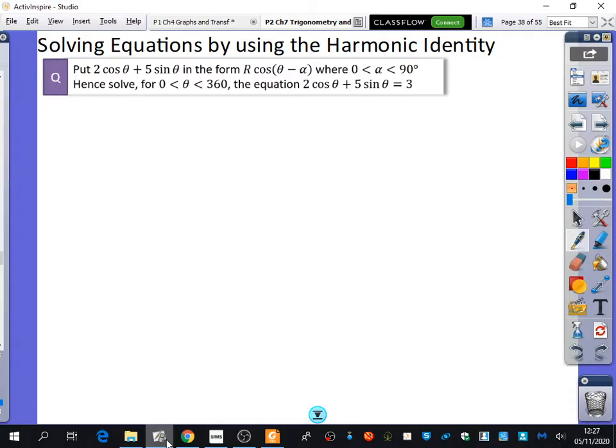First of all, it says put that thing into that form and then hence solve the equation. But I want to start off by looking at this equation to try and explain why we even need the harmonic identity. So my equation is 2 cos θ plus 5 sin θ equals 3. Now, we actually can't solve this with the skills that we have currently got.